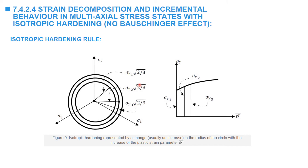If we view the yield surface from a perspective parallel to the hydrostatic axis, it appears as a cylinder with radius sqrt(2/3) multiplied by sigma yield. The strain hardening region is characterized by an increase in yield stress. Isotropic hardening plasticity assumes this increase is isotropic, meaning the radius of the circle increases with increasing permanent plastic deformation. As the yield stress increases, the von Mises cylinder expands in the stress space.